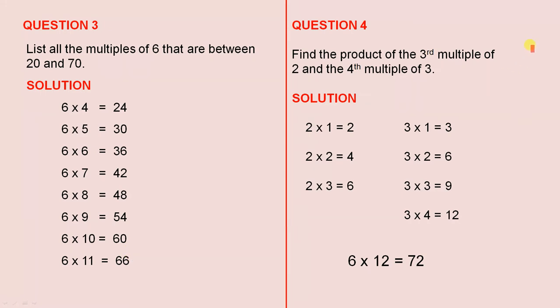Question 4: Find the product of the 3rd multiple of 2 and the 4th multiple of 3. Solution: 2 × 1 = 2, 2 × 2 = 4, 2 × 3 = 6. So that's the third multiple of 2. Now we're looking for the fourth multiple of 3: 3 × 1 = 3, 3 × 2 = 6, 3 × 3 = 9, and 3 × 4 = 12. So that is the fourth multiple of 3.